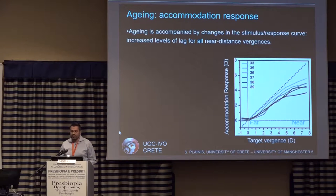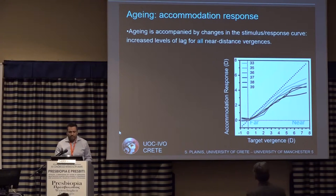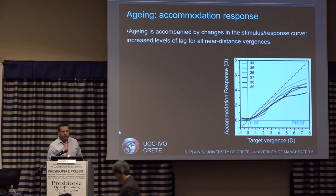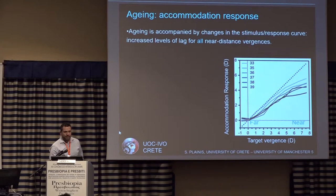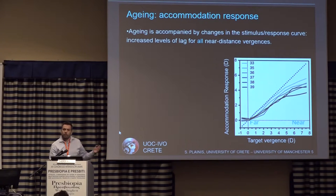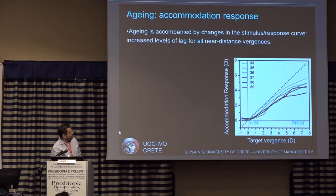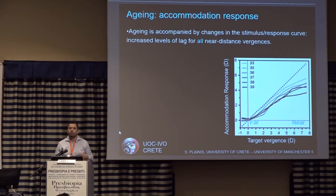We don't accommodate as accurately as we should. This graph shows our response as a function of target vergence — our demand. The dotted line corresponds to one-to-one, meaning we accommodate as much as we should. You can see that even in a fairly young person of 33 years of age, there is some lack of accommodation for near targets — as we must accommodate for closer targets, we accommodate a bit less.